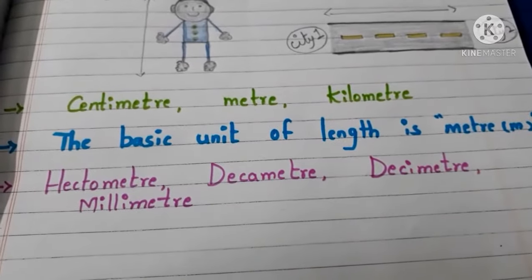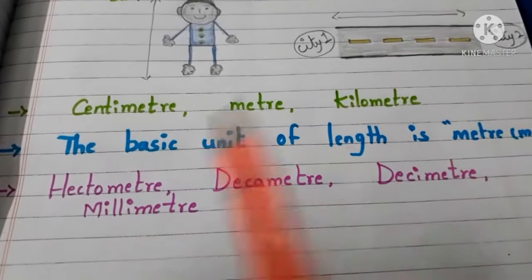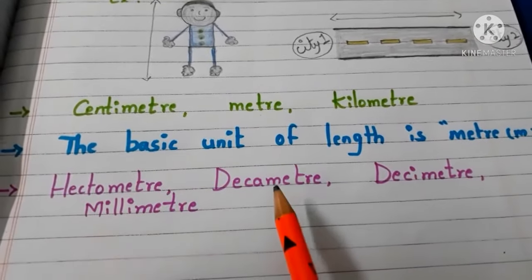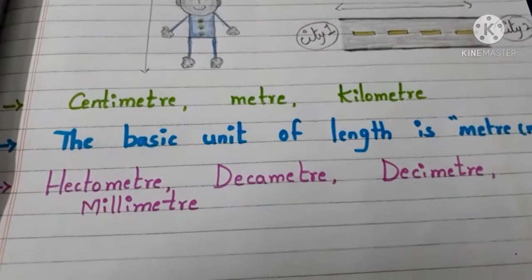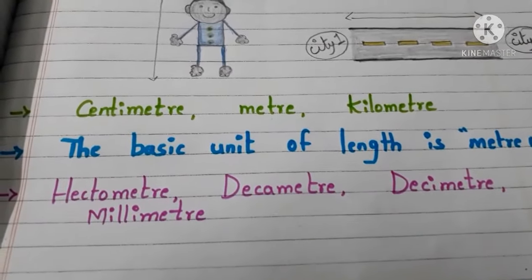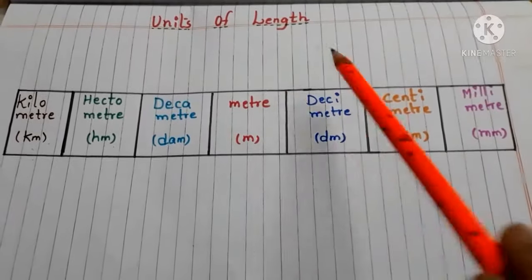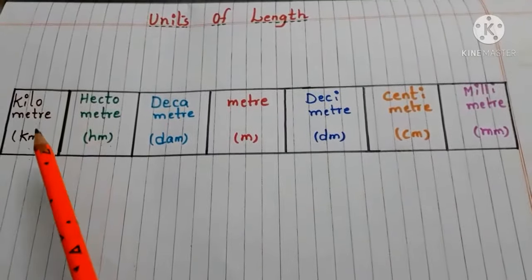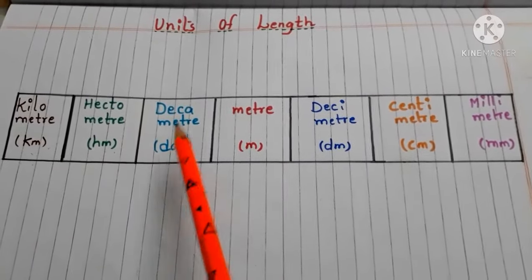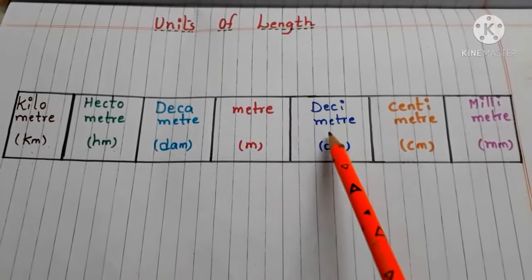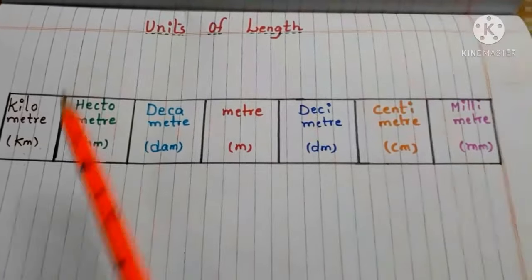Generally we use centimeter, meter, and kilometer as units to measure length. The basic unit of length is meter. Apart from these units, we also have hectometer, decameter, decimeter, and millimeter to measure smaller or larger quantities.